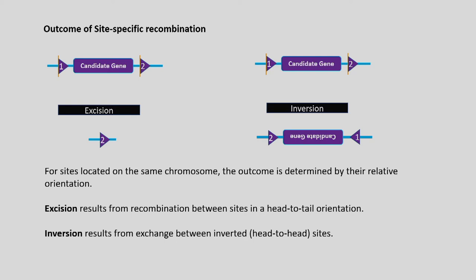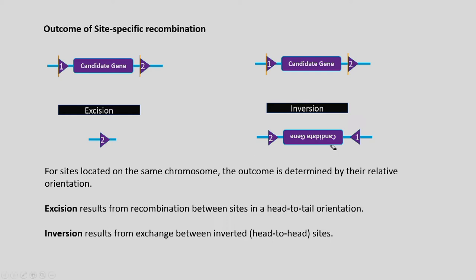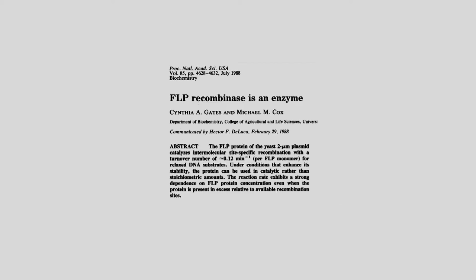Site-specific recombination may also lead to excision of genes — the candidate gene disappears from the sequence. In the case of inversion, the gene is inverted. For sites located on the same chromosome, the outcome is determined by their relative orientation. Excision results from recombination between sites in a head-to-tail orientation, while inversion results from exchange between inverted head-to-head sites.